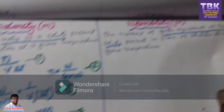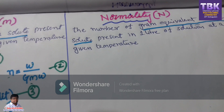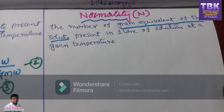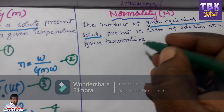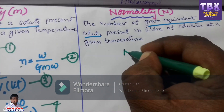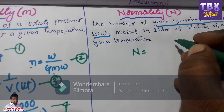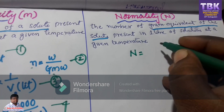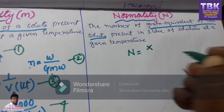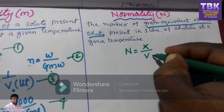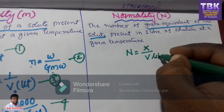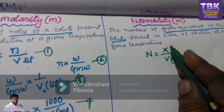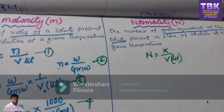Now, coming to the normality problem. The normality definition is: the number of gram equivalents of the solute present in one liter of solution at a given temperature. Normality is represented by capital N. Capital N equals number of gram equivalents of the solute divided by volume in liters. Number of gram equivalents is represented by X. Comparing the two formulas: M equals n by V, but normality N equals X by V. This is the first equation for normality.